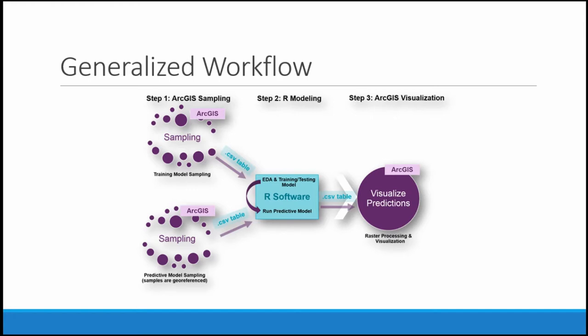This is just our generalized workflow. Basically, we have our archaeological data that we use to sample our environmental variables. We also sample our variables with a grid of points to represent our total environment, our total modeling region, and feed all of that into the R software. We've been taking it out of GIS simply as CSV files, feeding it into R, doing our modeling, and then spitting out more CSV files that are converted back into GIS rasters.